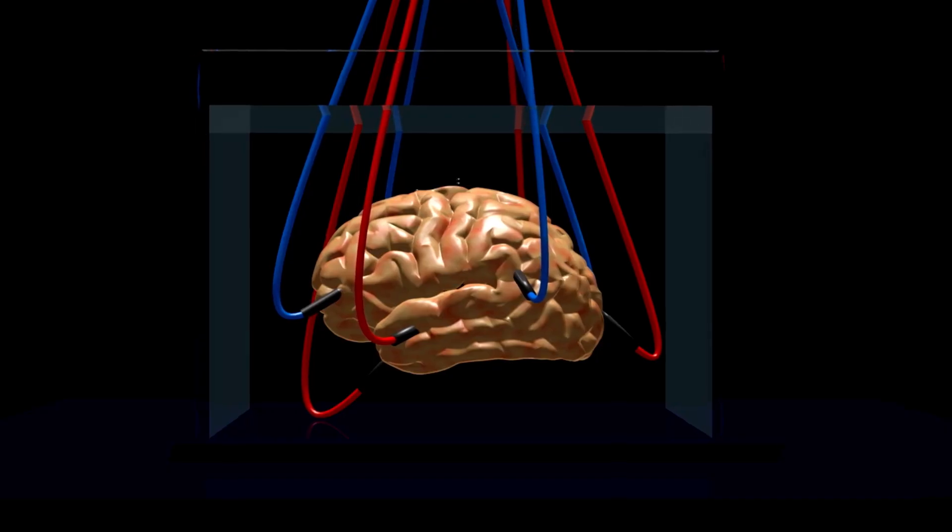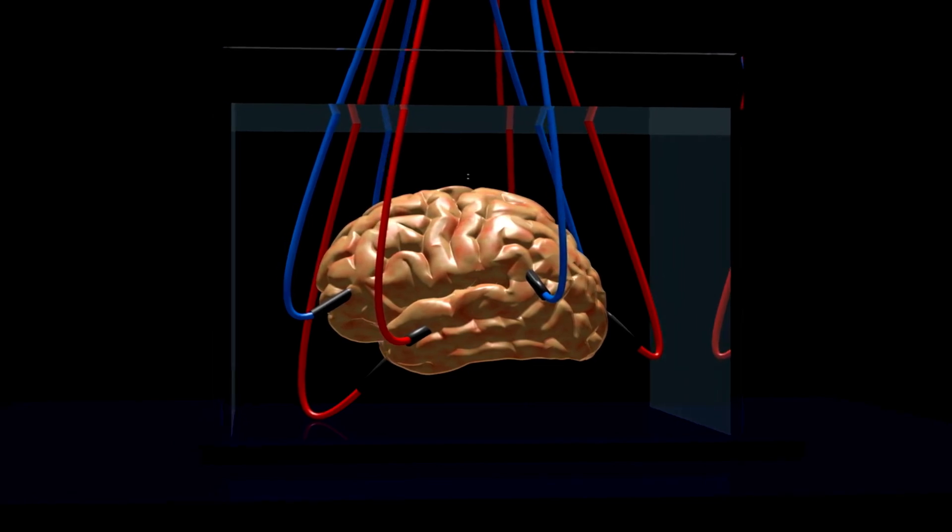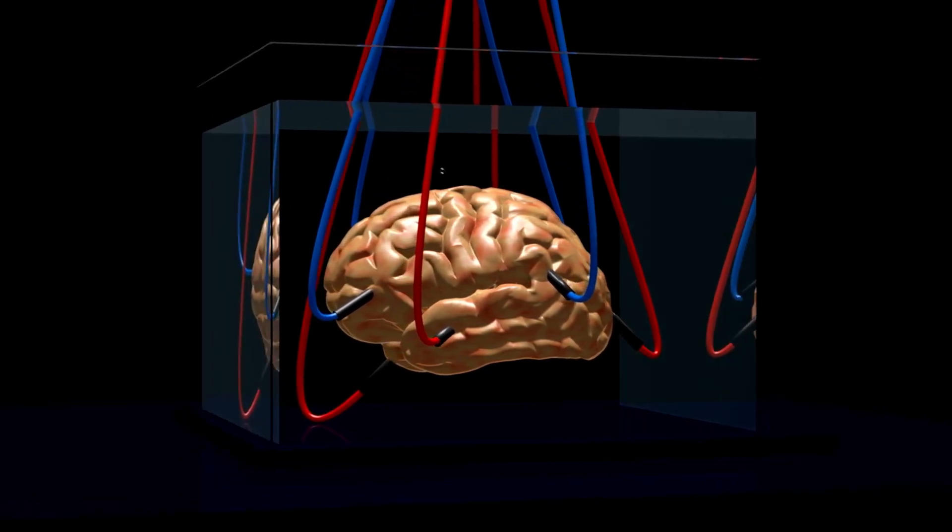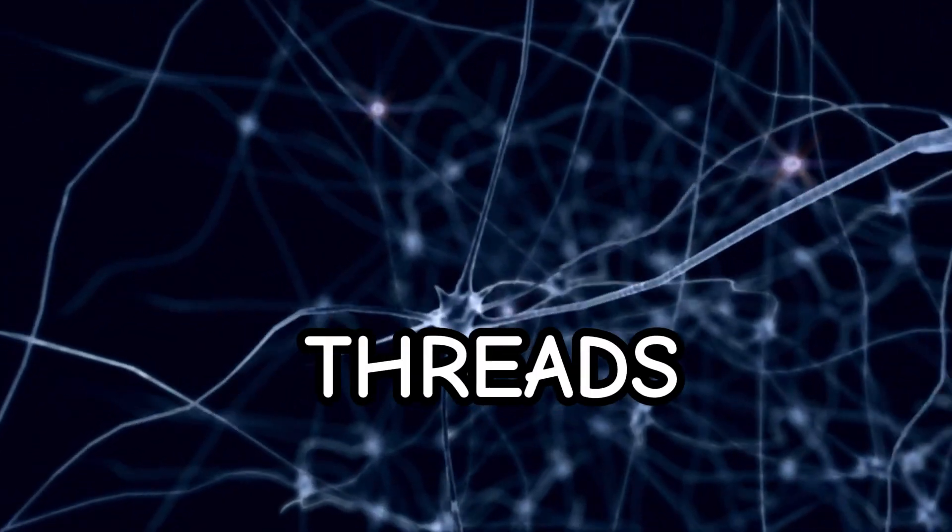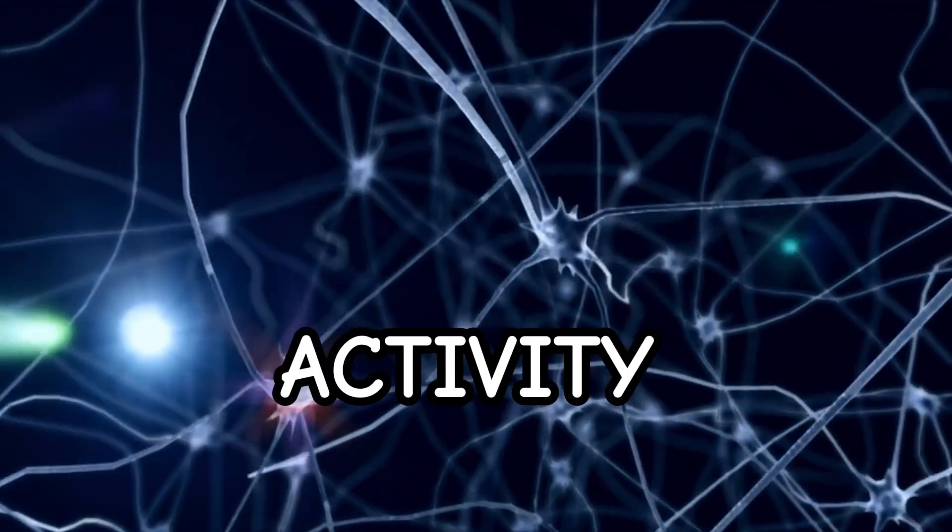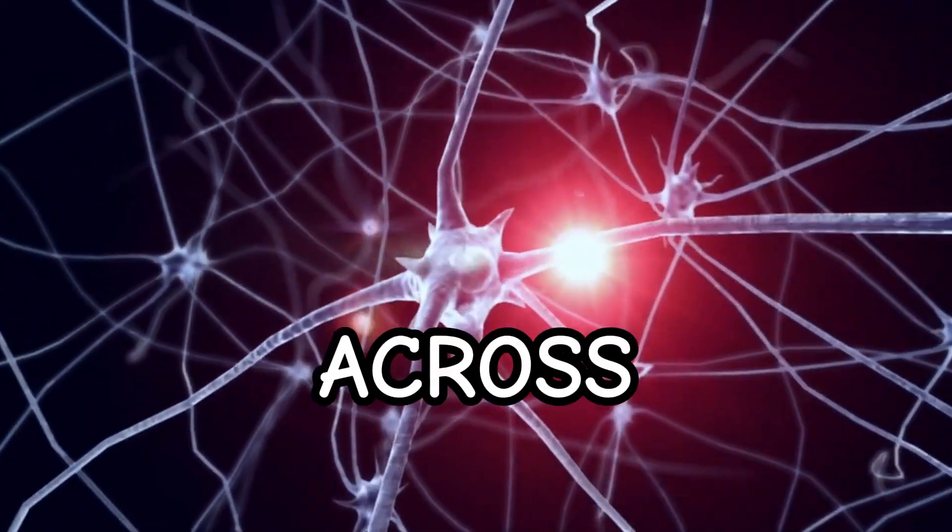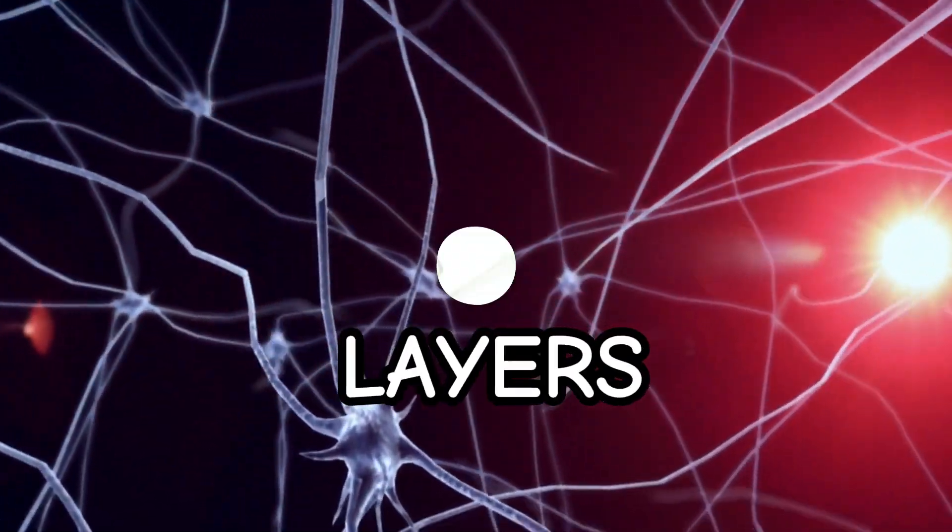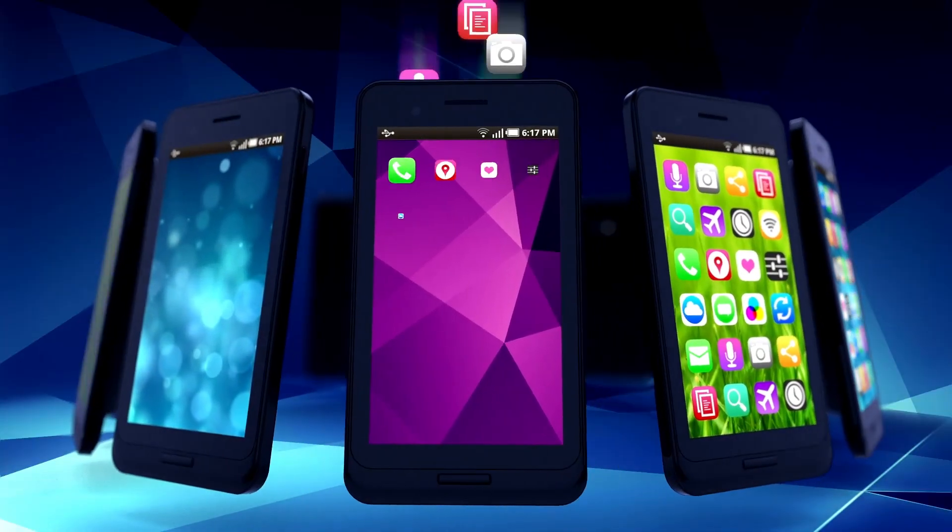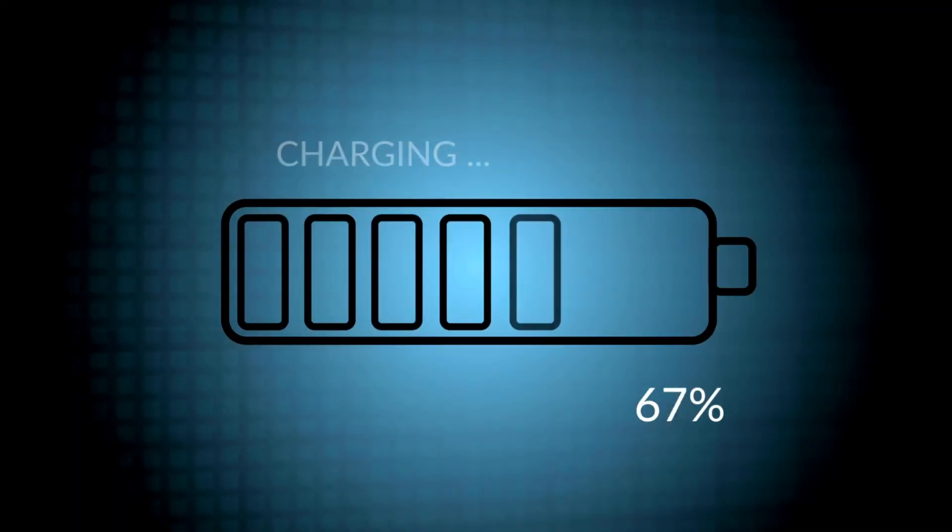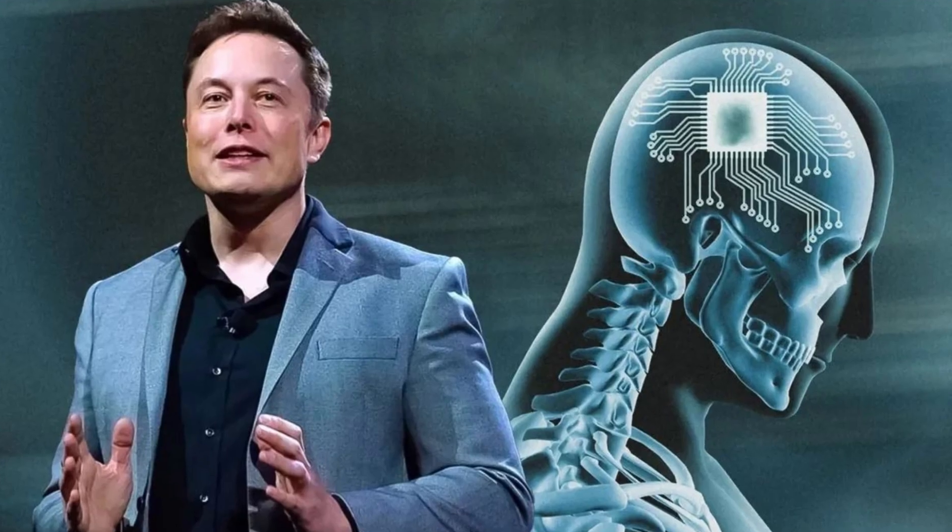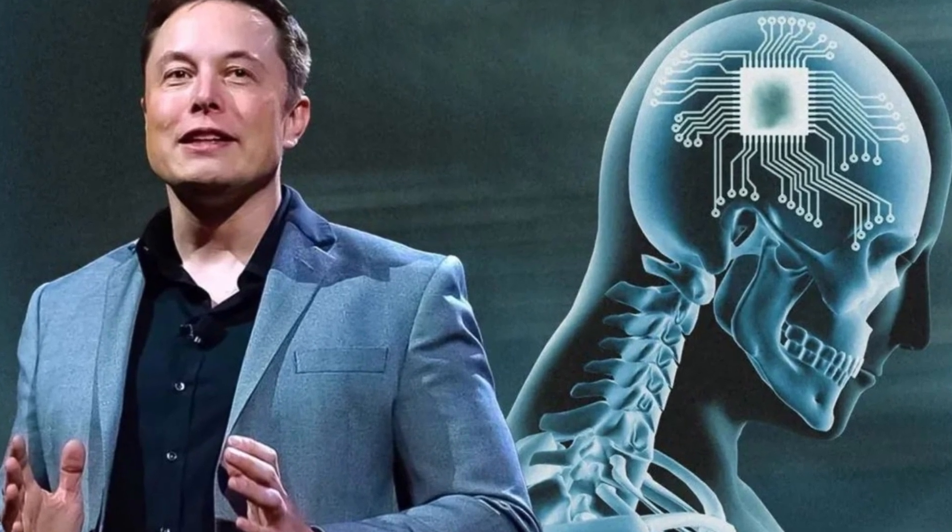The electrodes are connected to ultra-thin and flexible threads, which are thinner than a human hair, and can be inserted into the brain tissue with minimal damage. The threads can record and stimulate the activity of thousands of neurons simultaneously across different brain regions and layers. The chip can process and compress the data and transmit it wirelessly to a smartphone app or another device. The battery can be charged wirelessly, and the device can be implanted under the scalp, making it invisible and comfortable.